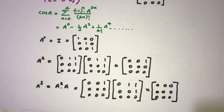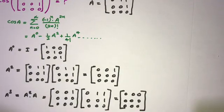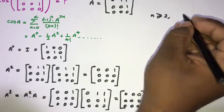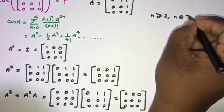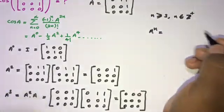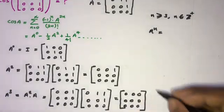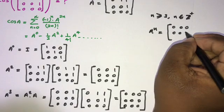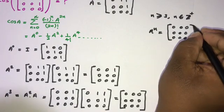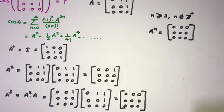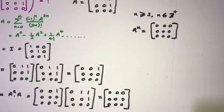An interesting point: for any positive integer n greater than or equal to 3, A raised to the n equals the zero matrix [0,0,0; 0,0,0; 0,0,0]. This means all higher-order terms in the cosine series vanish.